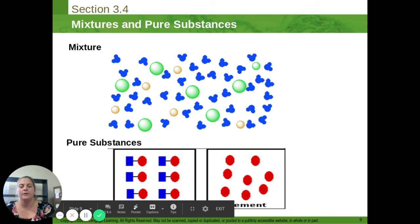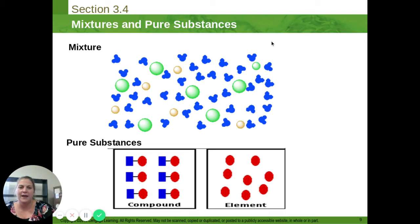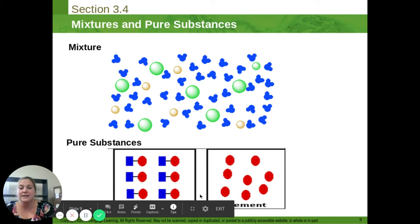Particle representations. We're going to pretend, and I should have added a box around this, this top part is an example of a particle diagram of a mixture. There's three different kinds of things in here. There's this compound, and I guess that could be an element if they're all the same color. These brown ones and these green ones, we can tell they're not connected. So there's a mixture of three different things going on in there. Down here in each box, I have a pure substance. This is a pure substance of compounds. This is a pure substance of elements.